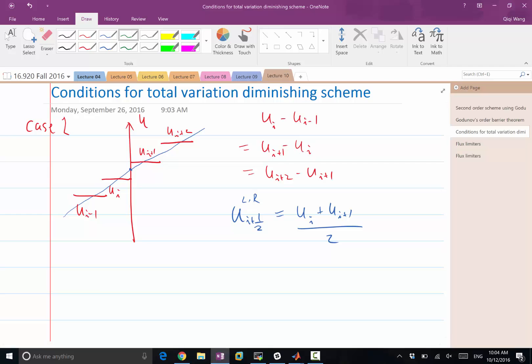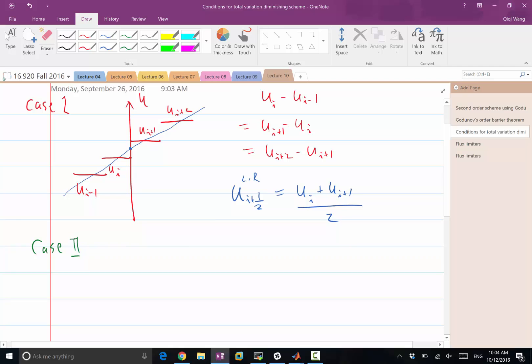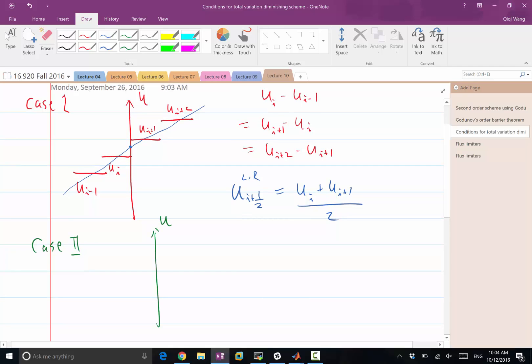The second case is a completely different scenario. This is a scenario where my ui is the local maximum.